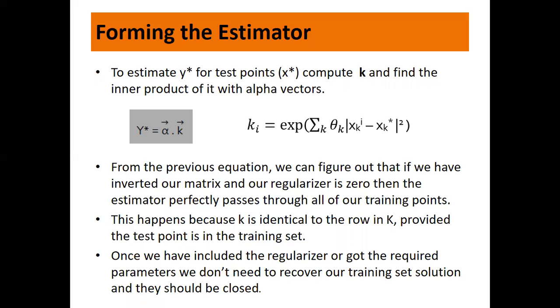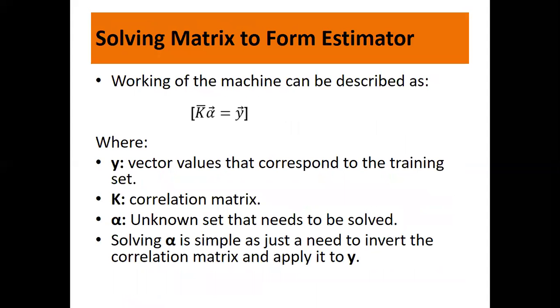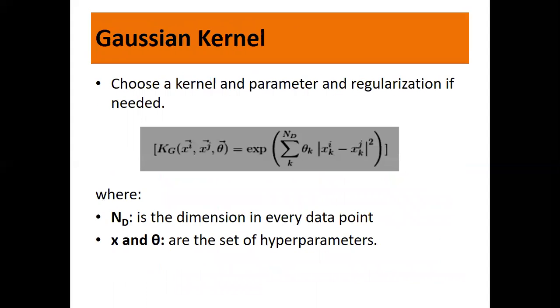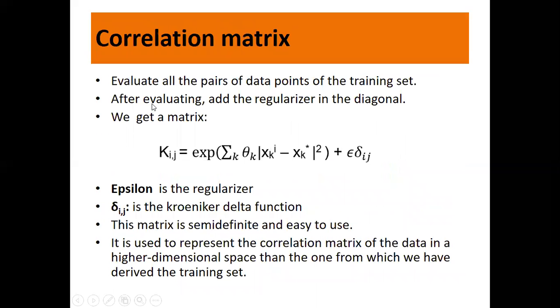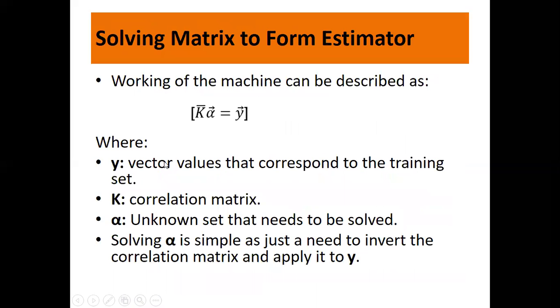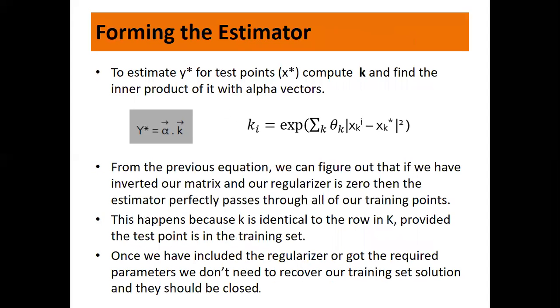What were the steps we used for modeling SVR? First, we collected the training set, then selected the Gaussian kernel, then created the correlation matrix K_ij, got the coefficient alpha by inverting it, and then formatted the estimator using this function.